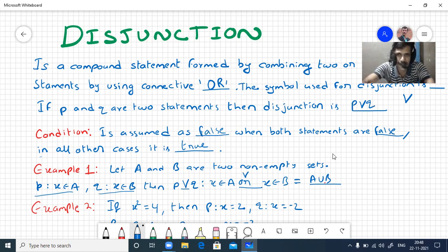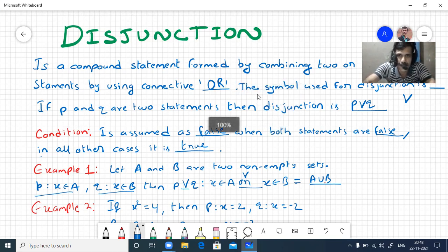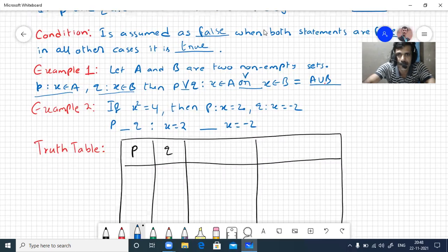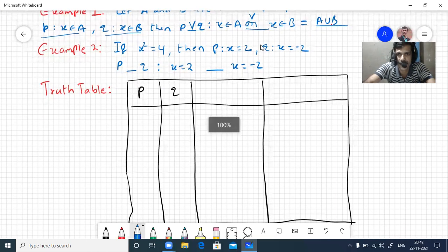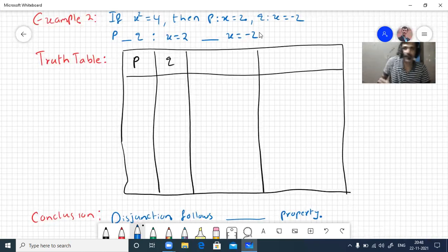X squared equal to 4, or any quadratic equation you solve, you will be getting two values. If x squared is 4, then we'll take these two statements: x equal to 2 or x equal to minus 2. You'll get the solution among this. How to write the disjunction statement, we'll see.